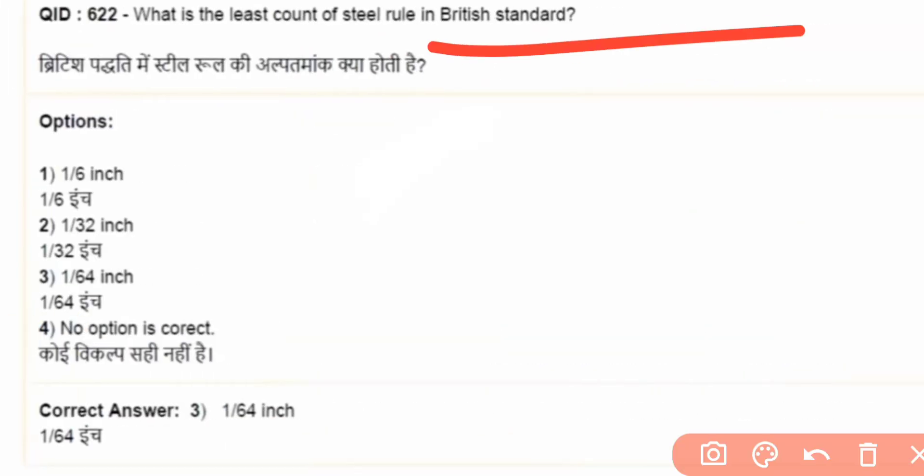Next question is the British standard. What is the least count? The least count is 1 by 6 inch, 1 by 32 and 1 by 64. The answer is 1 by 64 inch.